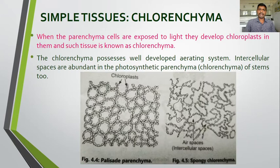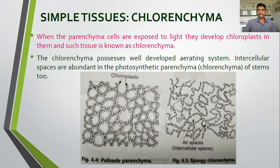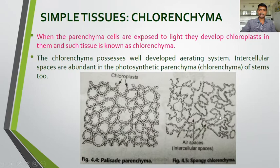The chlorenchyma possesses a well-developed aerating system. Intercellular spaces are abundant in the photosynthetic parenchyma — that is the chlorenchyma of stems too. In this diagram, we can see the chloroplasts on the inner wall of the parenchyma cell, so these cells perform the process of photosynthesis. This is the palisade parenchyma and this one is the spongy parenchyma, where intercellular spaces can clearly be seen. Here also chloroplasts are present in the parenchyma cells — such cells are called chlorenchyma.